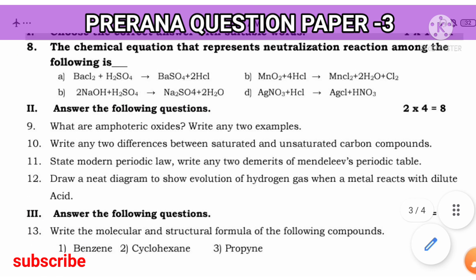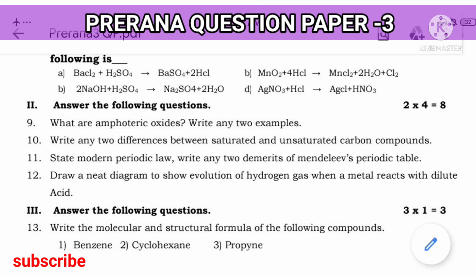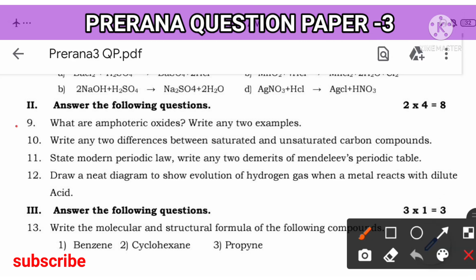Next, repeated question: What are amphoteric oxides? The metal oxides which react with both acid and base to gives rise to salt and water is called amphoteric oxide. Example, aluminium oxide and zinc oxide.